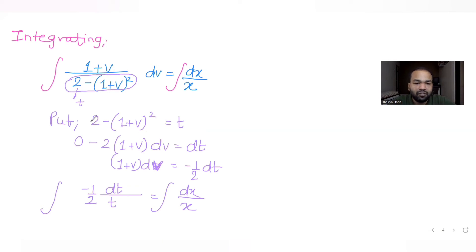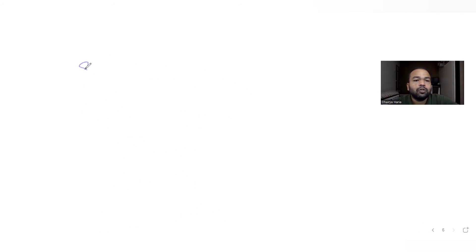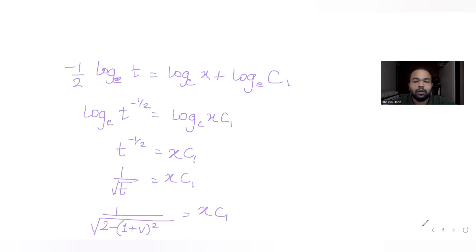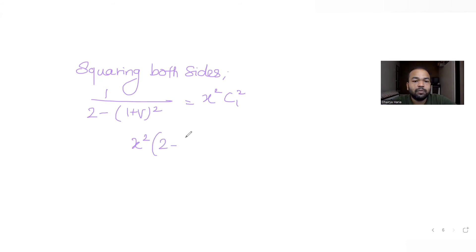Now let's resubstitute t. We have t = 2 minus (1+v)², so the equation becomes: 1 / √[2 minus (1+v)²] equals x·C₁. Squaring both sides removes the square root on the left and gives x²·C₁² on the right. Taking the expression across, x²·[2 minus (1 plus v)²] equals a constant, and expanding (1+v)² gives 1 plus 2v plus v².